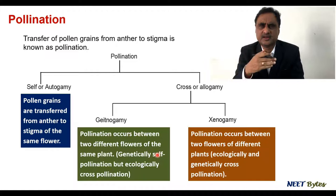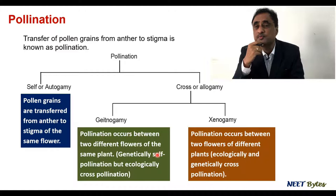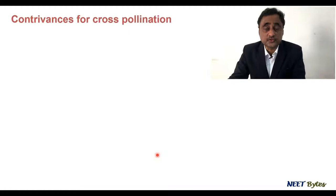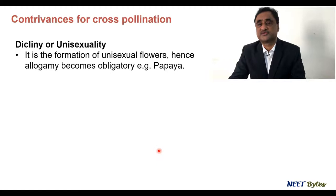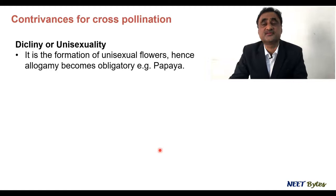In case of self-pollination, it leads to the generation of homozygous conditions, and variation is not produced. But in case of cross-pollination, it leads to variations. Now let's talk about what are the contrivances which eventually help in the process of cross-pollination. The first is dicliny or unisexuality.